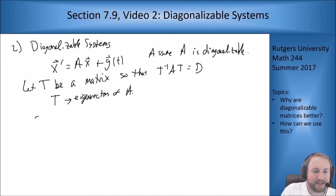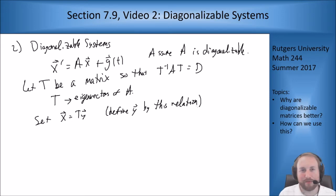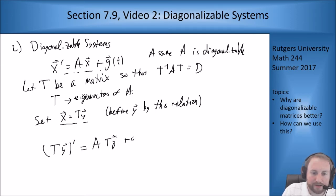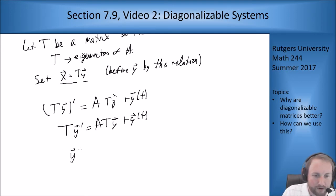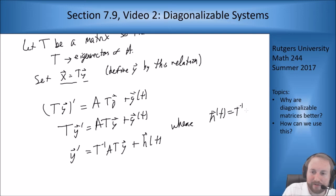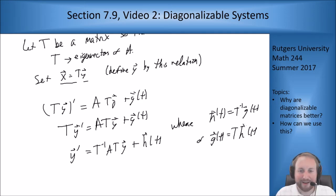And then I again want to do the same trick where I'm going to set x to be Ty, as in I'm going to define y by this relation. And I just want to plug in again. So if I plug in x equals Ty into my first equation, I get Ty prime equals A times T times y plus a vector g of t. And I can multiply both sides by T inverse. So I get y prime equals T inverse ATy plus an h of t, where h of t is T inverse g of t or g of t equals Th of t. So I'm just going to define this new function h.